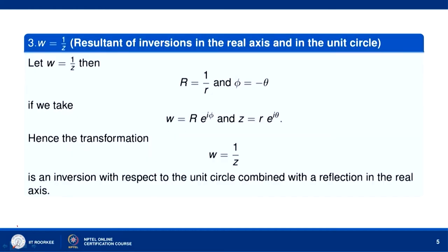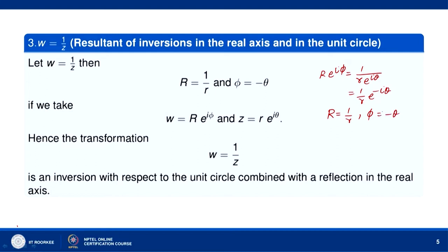Now let us consider the reciprocal function w = 1/z — it is the result of inversion in the unit circle combined with reflection in the real axis. Let w = Re^(iφ) = 1/z = 1/(re^(iθ)) = (1/r)e^(−iθ). Equating absolute values gives R = 1/r, and equating arguments gives φ = −θ.